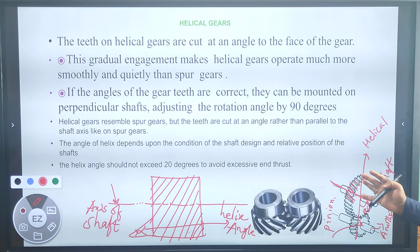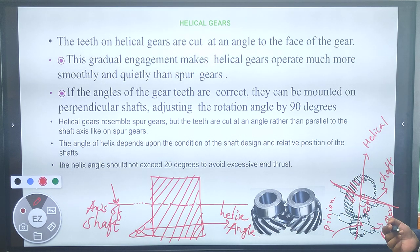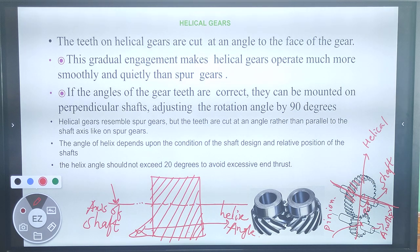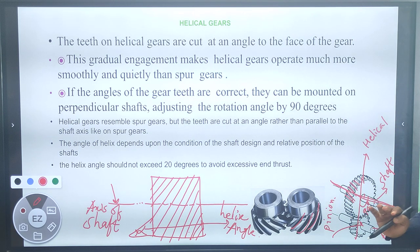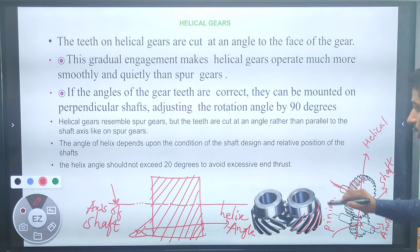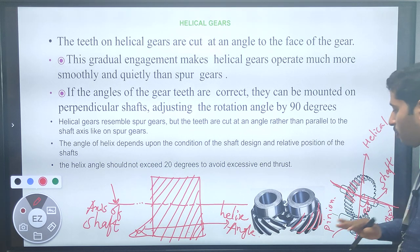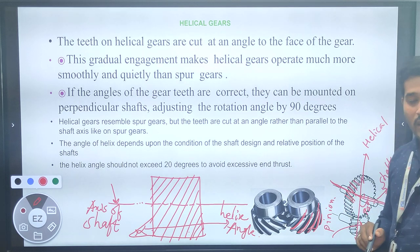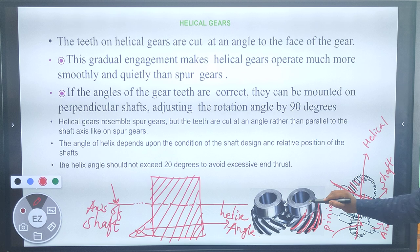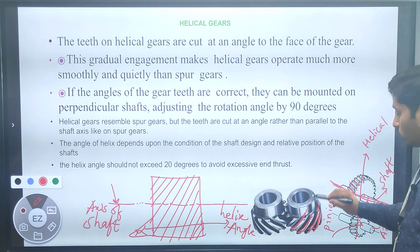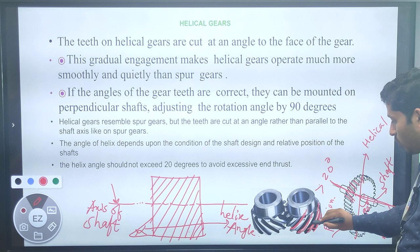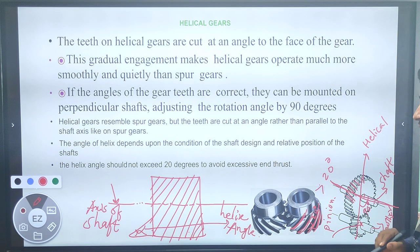The helical gear resembles the spur gear, but the teeth are cut at an angle rather than parallel to the shaft axis. The helix angle should be less than 20 degrees to avoid excessive end thrust. If the angle exceeds 20 degrees, there is a possibility of excessive end thrust. Therefore, the angle should not exceed 20 degrees.